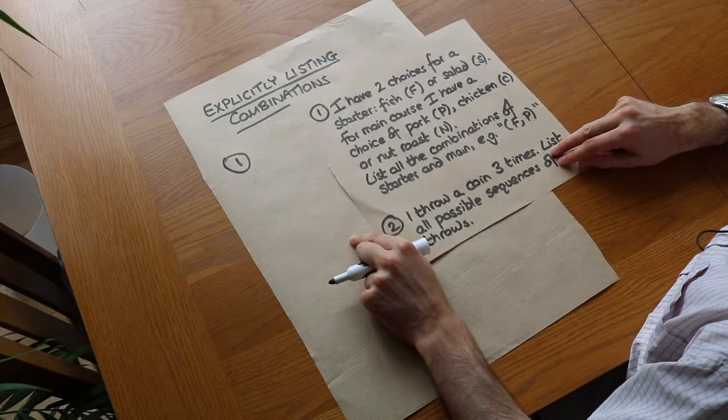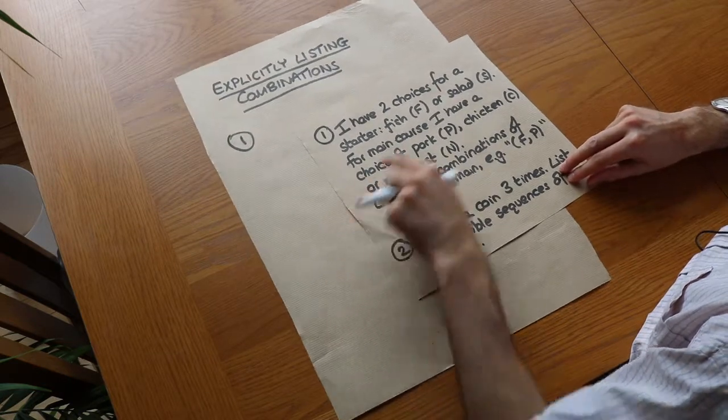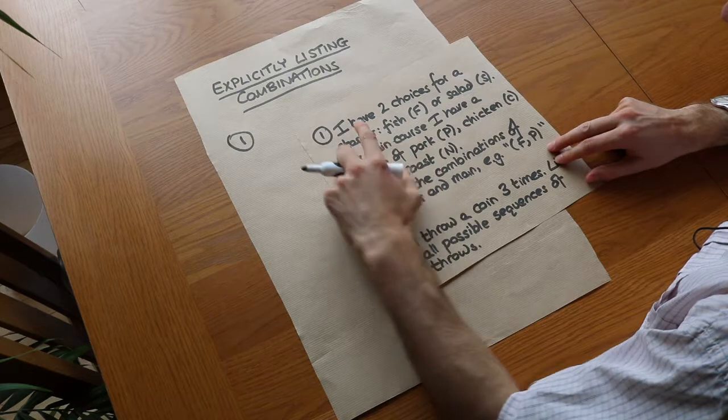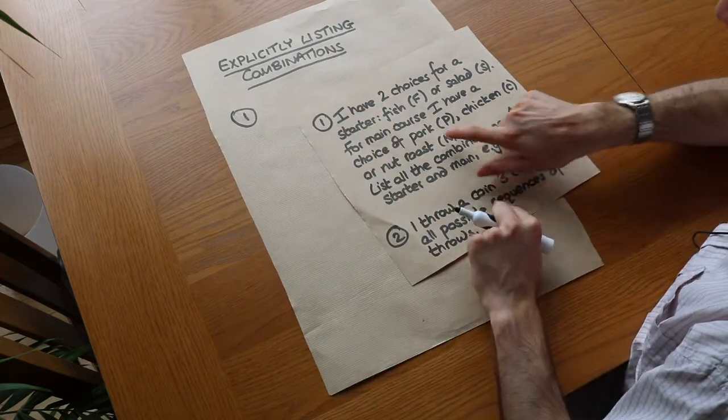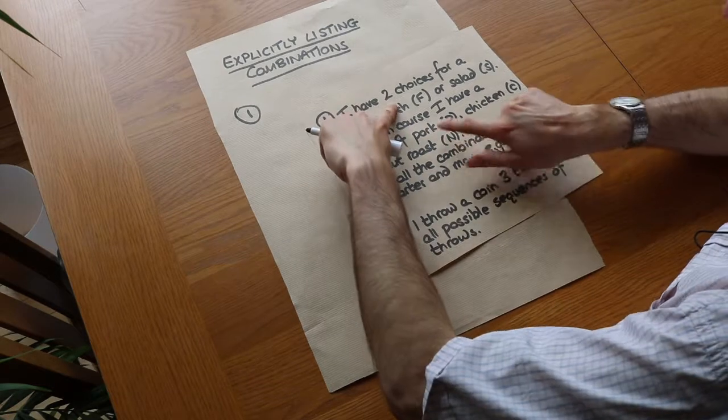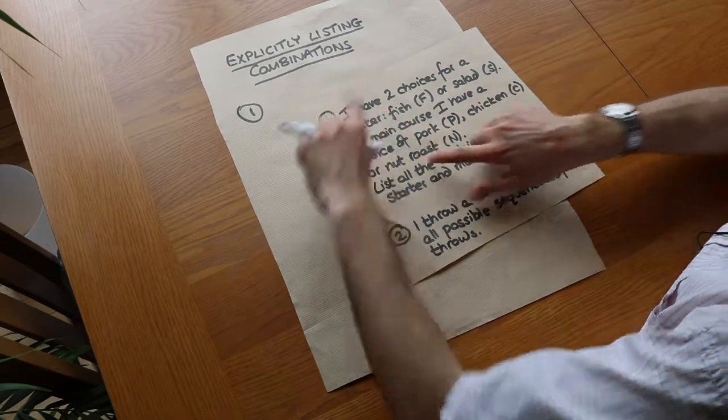Now the best way to do this is to fix one of the things in the first choice. So in the starter, let's say that we fix our choice of starter to fish and then we consider all the possibilities of the other things. We could have fish and pork, fish and chicken, fish and nut roast.